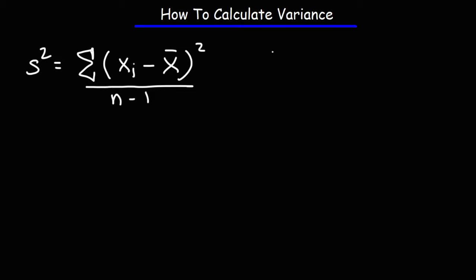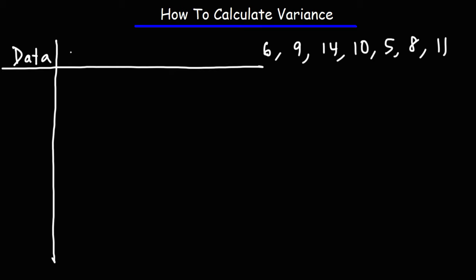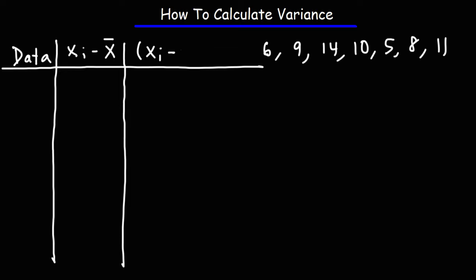Now let's calculate the variance given these numbers: 6, 9, 14, 10, 5, 8, and 11. Feel free to pause the video if you want to try this problem. So first, we're going to list the data in ascending order. In the next column, I'm going to put the difference between each data point and the sample mean, and then the square differences between each data point and the sample mean.